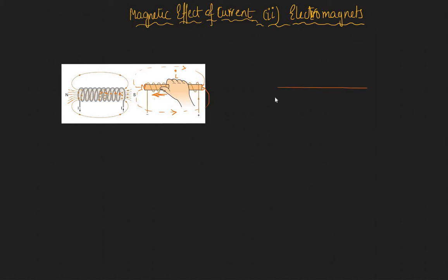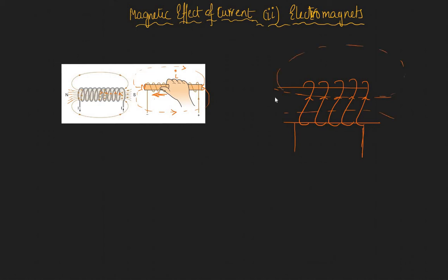Now, if you take this solenoid, it produces a magnetic field inside the coil. Let's assume that you have the current flowing in like this — your magnetic field lines will be like that.